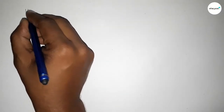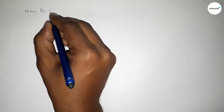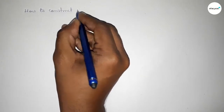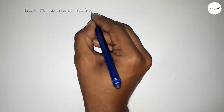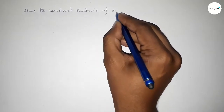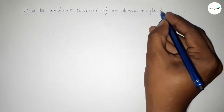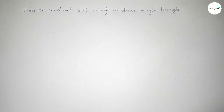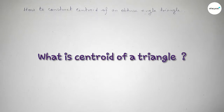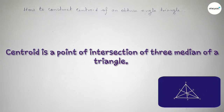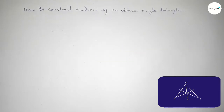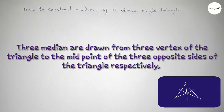Hi everyone, welcome to SI Share Classes. Today in this video we have to construct the centroid of an obtuse angle triangle using a compass in an easy way. The centroid is the point of intersection of the three medians of a triangle, and the three medians are drawn from the three vertices of the triangle to the midpoints of the three opposite sides respectively.